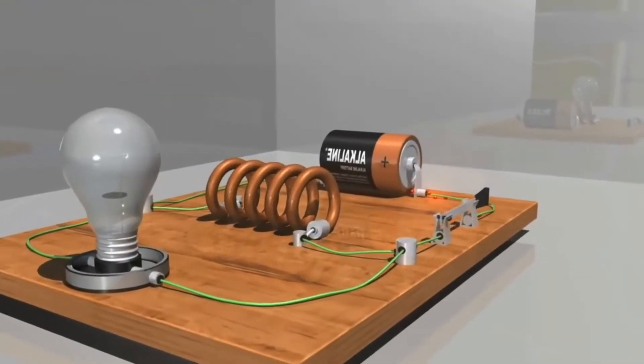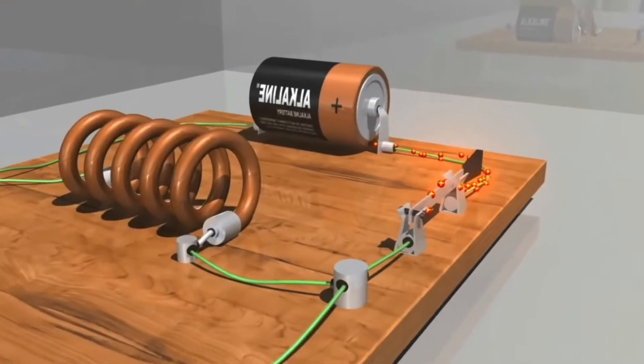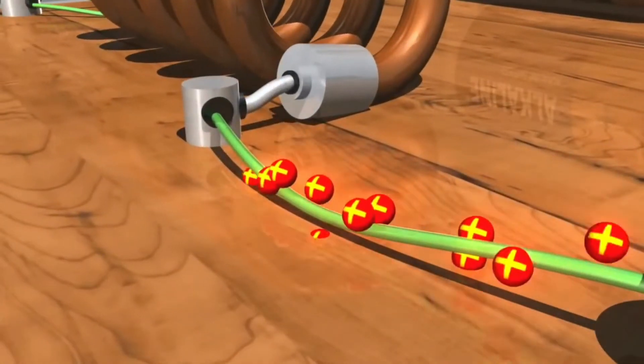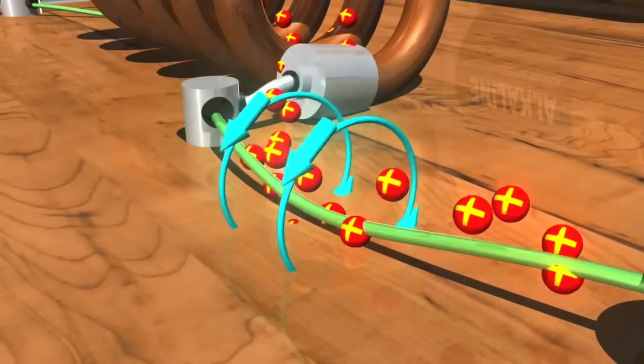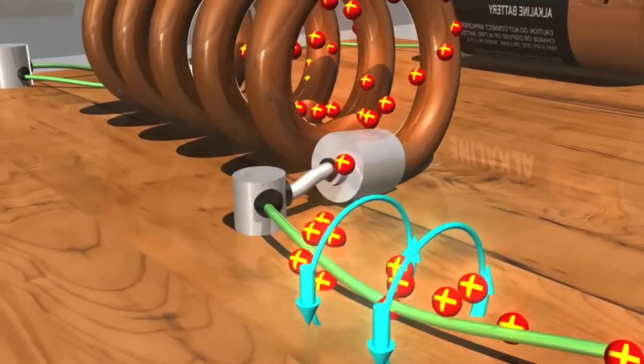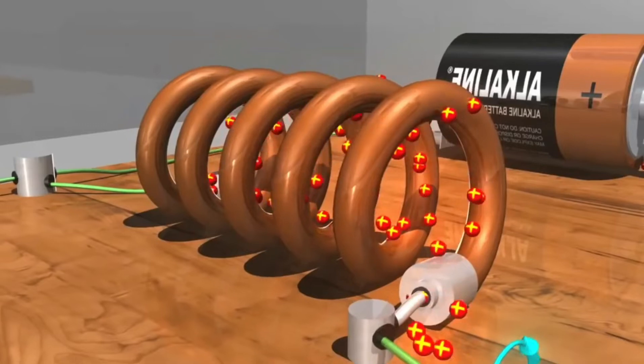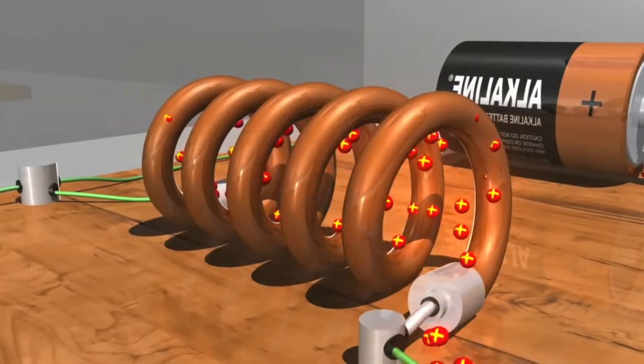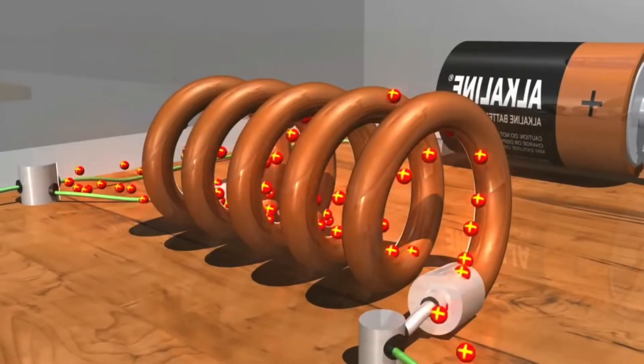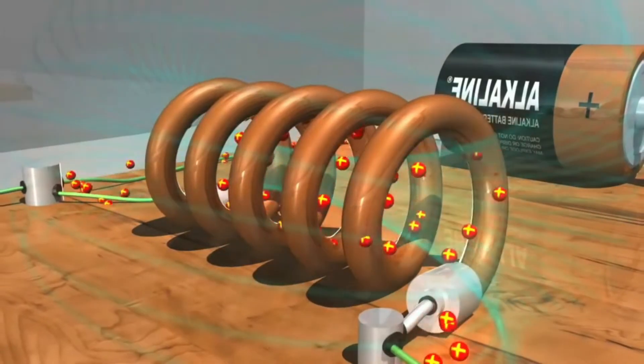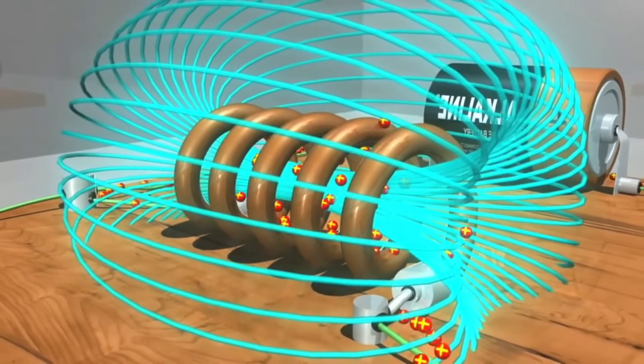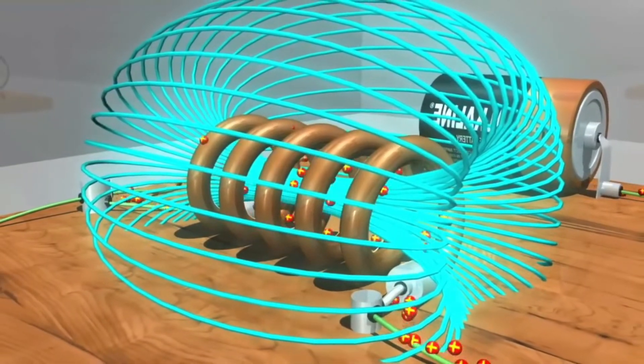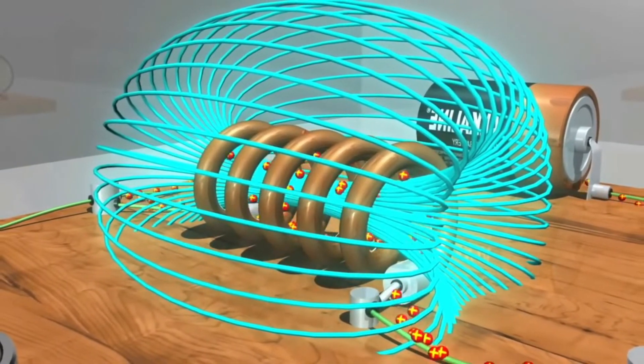When we power this circuit, the electrons in the current create a magnetic field around the wire as they move through it, as shown by these blue arrows. If the wire is formed into a coil like this inductor, the magnetic field lines converge in the center. They gradually build up to a maximum magnetic field that is much stronger than the one around the straight length of the wire.